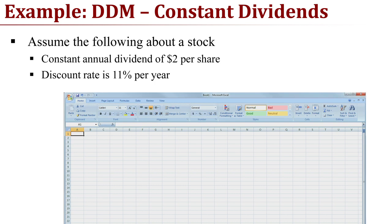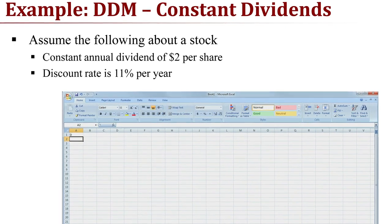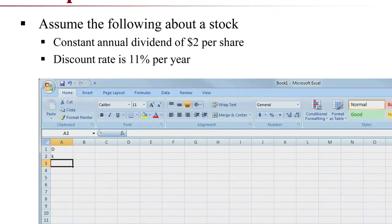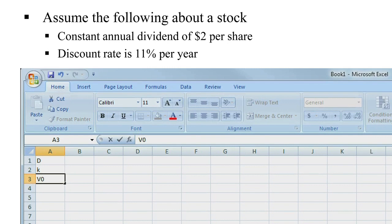Let's implement the dividend discount model in an Excel spreadsheet. We'll start by labeling the cells: D, K, the discount rate, and V0, the intrinsic value that we're solving for.